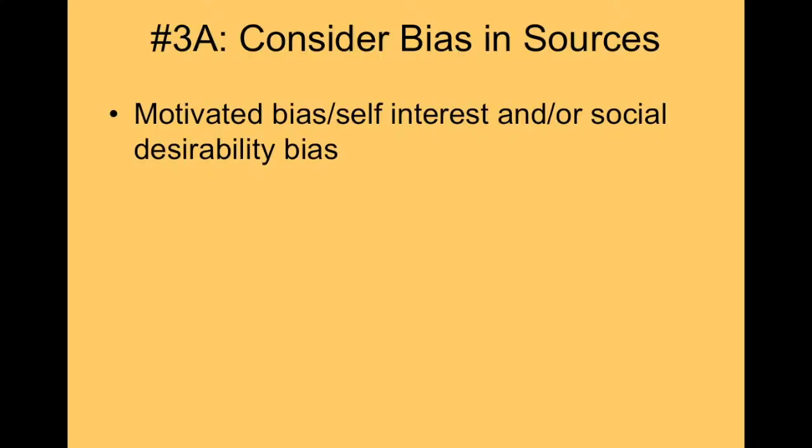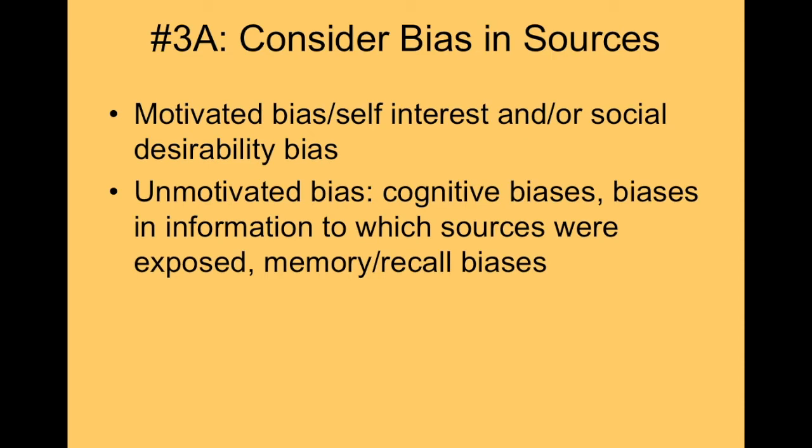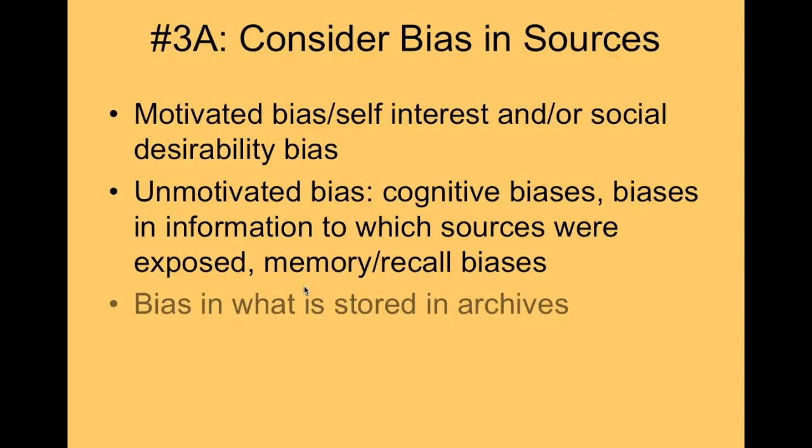Third, think about biases in sources. Are there motivated biases — reasons people will spin things in interviews or only make flattering documents available? There may also be unmotivated biases: people remember things differently, perhaps in ways favorable to themselves, or they were exposed to only part of the story. Think of the biases in what's stored in archives, what's made available, what's still classified, and what reasons people make information available for their own instrumental purposes.